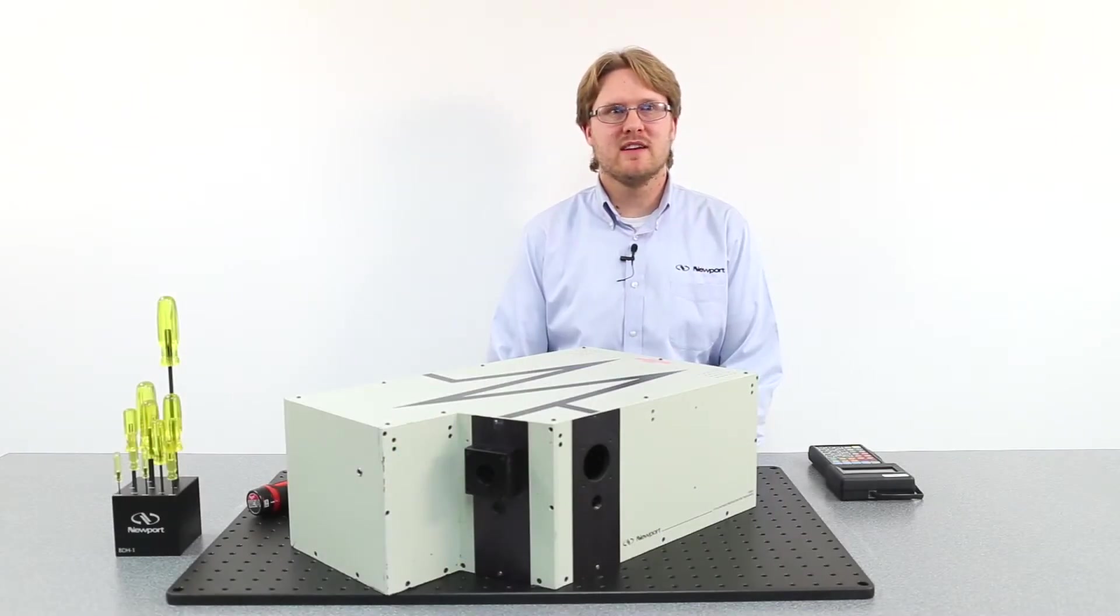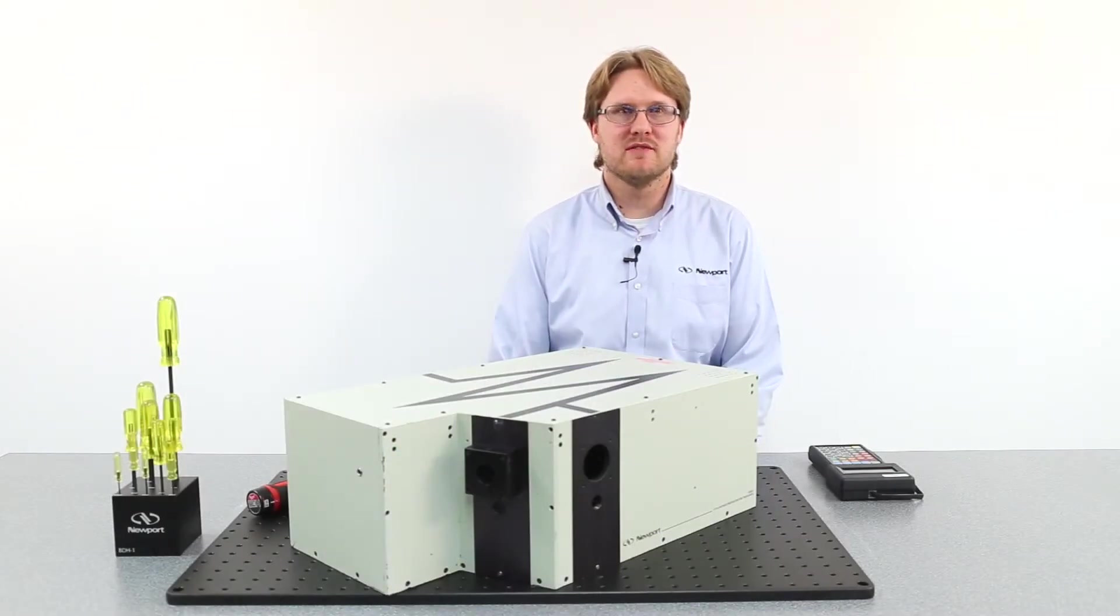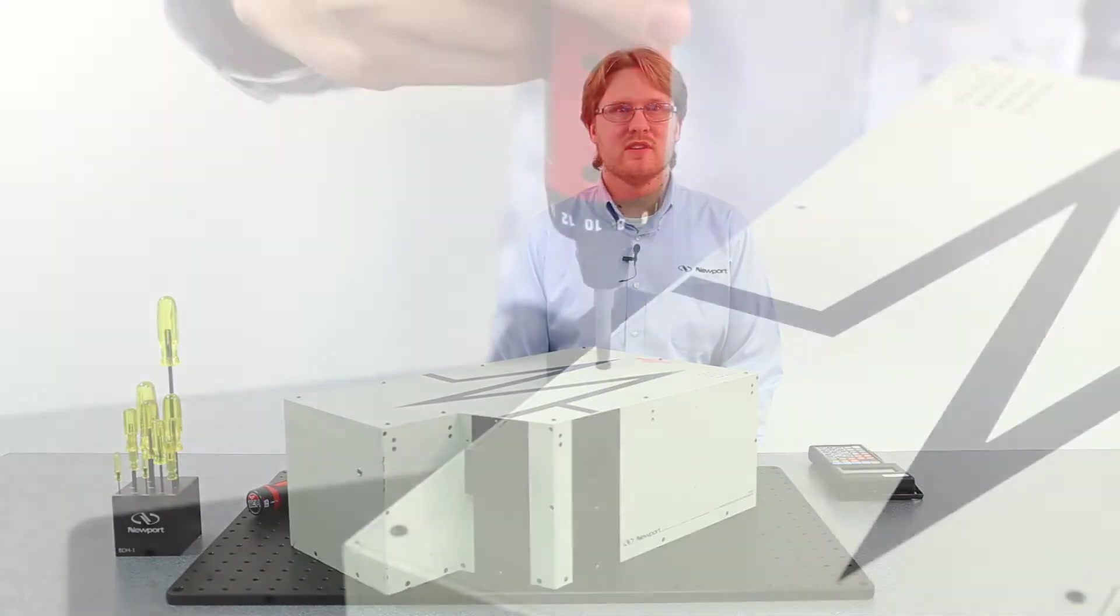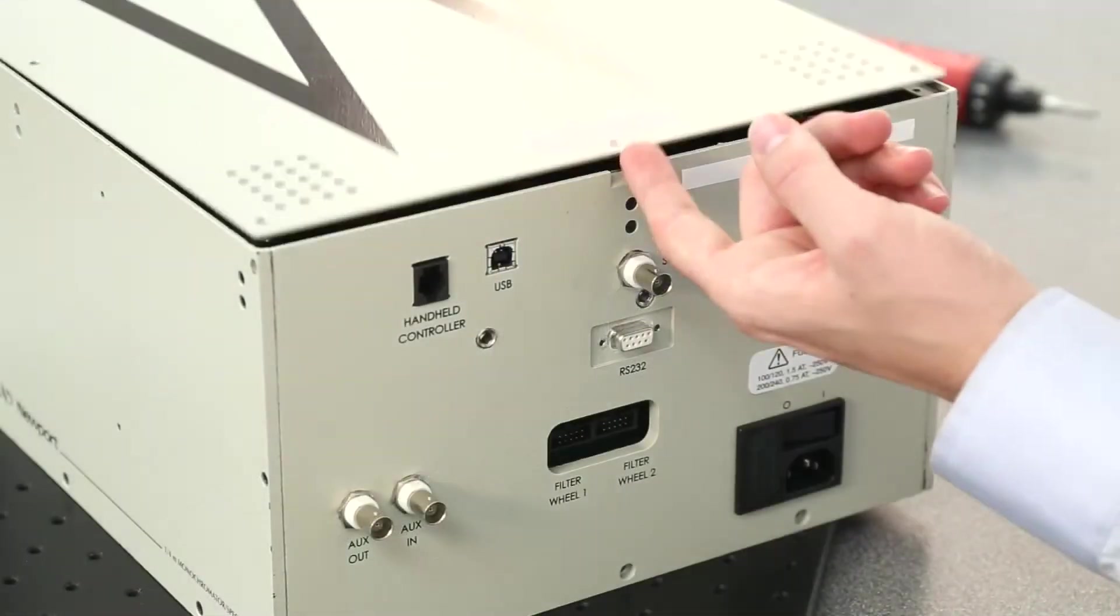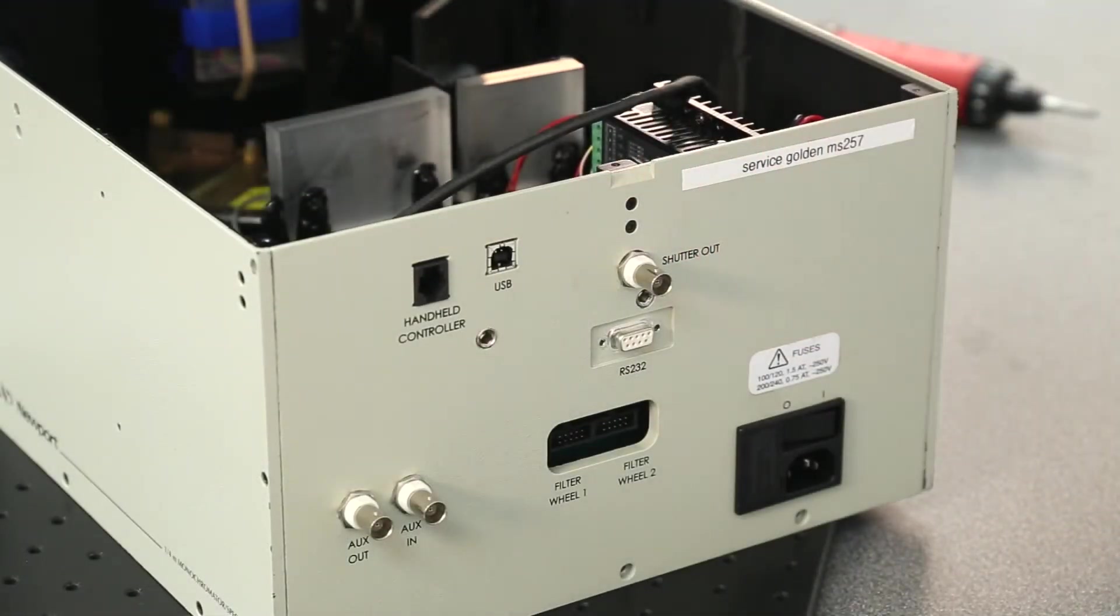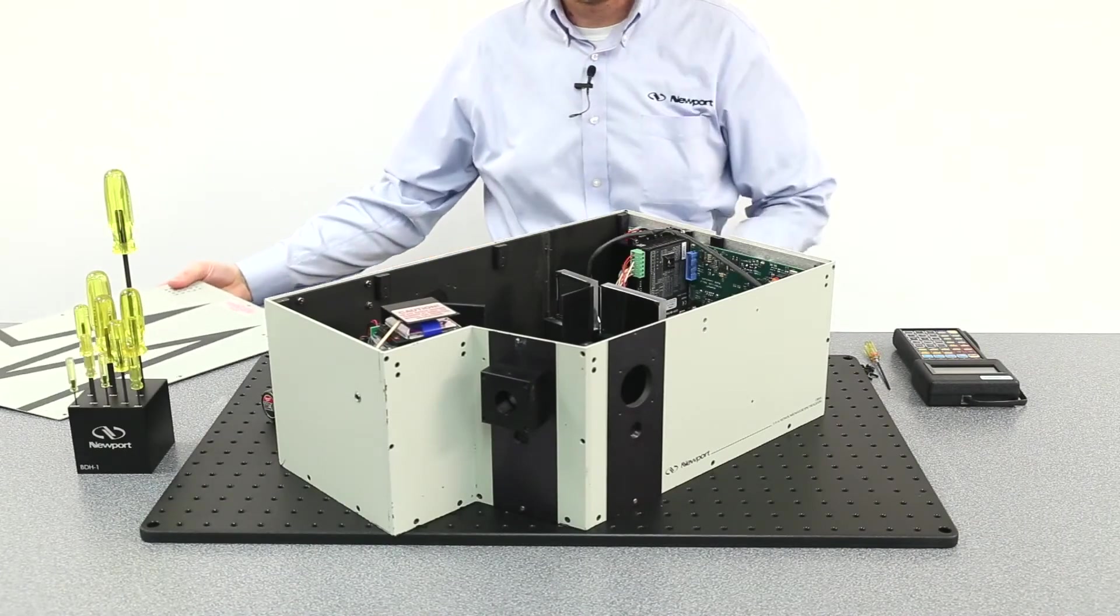After unpacking and mounting the MS-257 in a convenient lab location, we are ready to install the turret. We start by removing the cover of the MS-257 and taking note to leave the protective covers on the gratings until the mount has been screwed down.